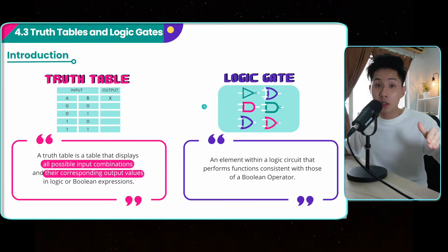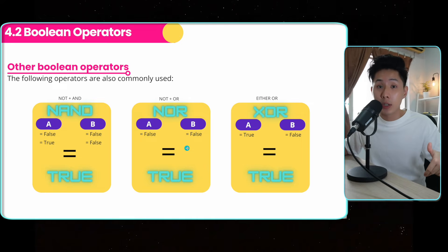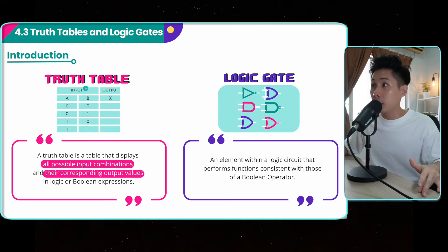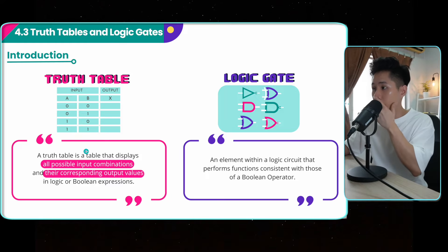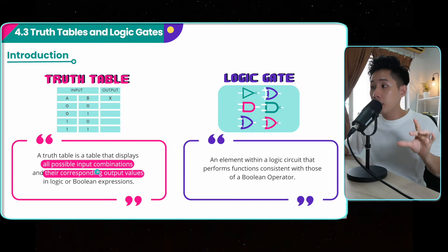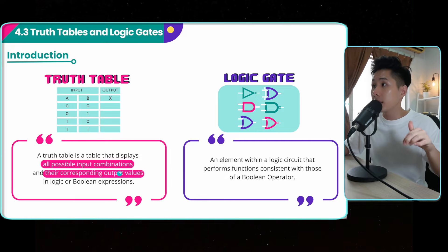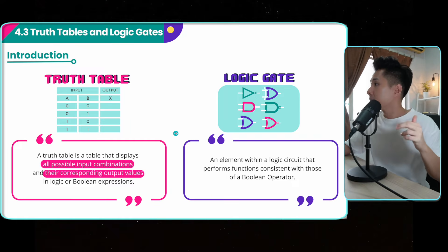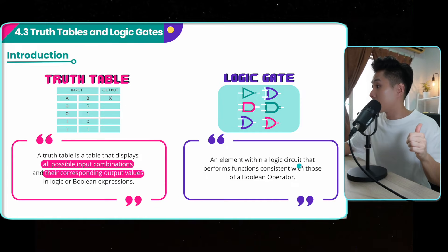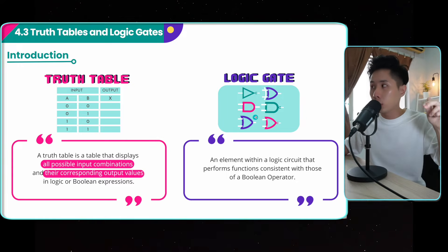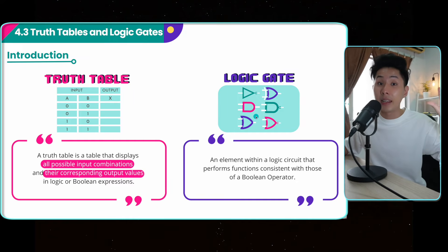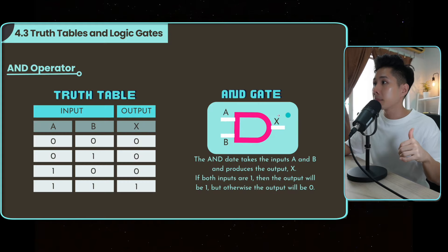Let's look into truth tables and logic gates to understand how these Boolean operators function. There are two properties for logic gates. First is their truth table — a table that displays all possible input combinations. If you have two inputs, there are four possible combinations, along with their corresponding output values in a logic or Boolean expression. Second is the logic gate symbol — an element within a logic circuit that performs a function consistent with a Boolean operator. This is what we draw on a circuit to indicate AND gate, NOR gate, OR gate, etc.